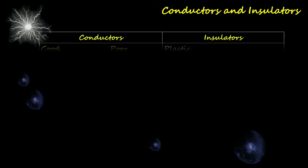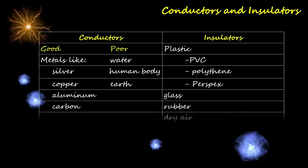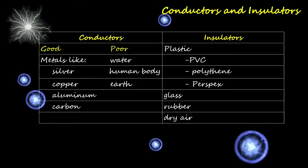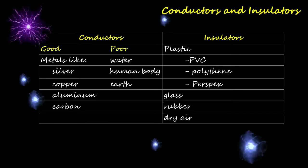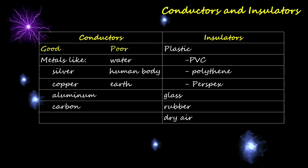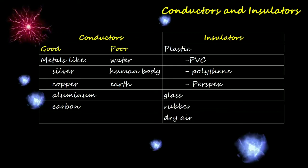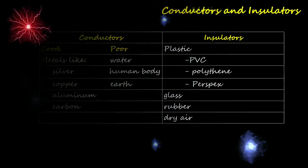This table shows various examples of conductors and insulators. Good conductors are metals like silver, copper, aluminum, and carbon. Poor conductors are water, the human body, and earth. Examples of insulators are plastic, glass, rubber, and dry air. Let's talk about the methods of charging.